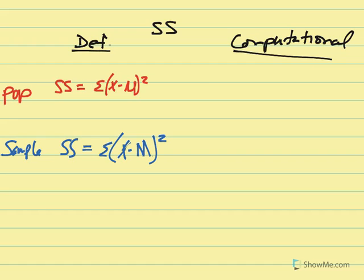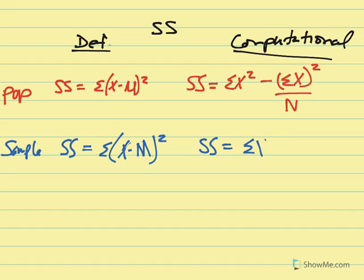The computational formula for SS for population is as follows. We take the sum of all x values that have been squared minus the sum of x squared over capital N. And for a sample, SS for the computational formula is very similar. The only difference is what we're dividing by. Instead of capital N, we're dividing by n.